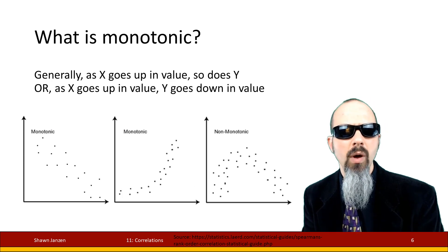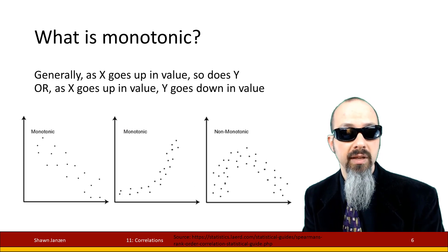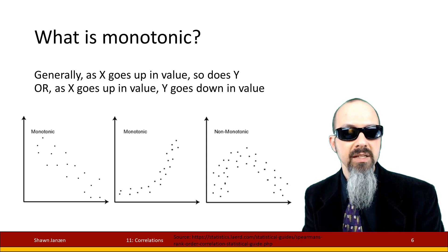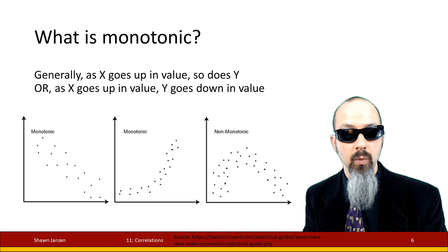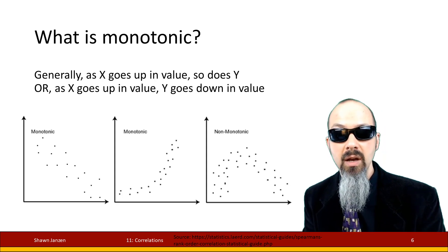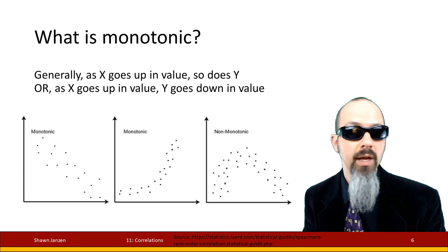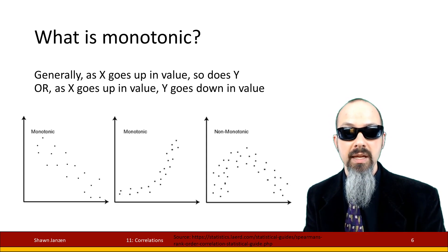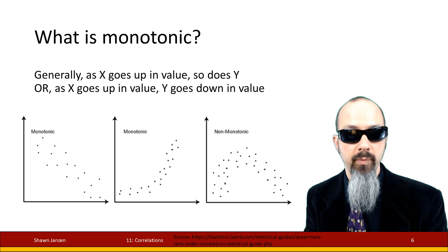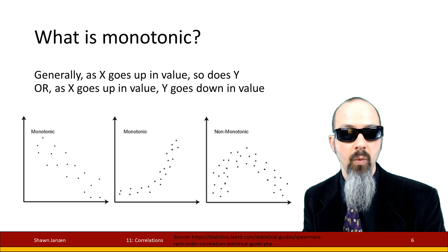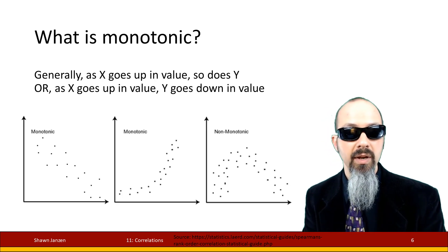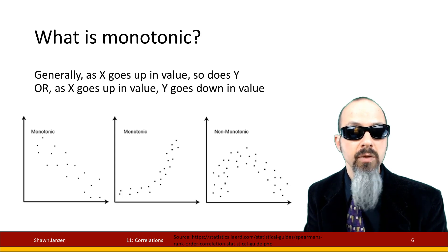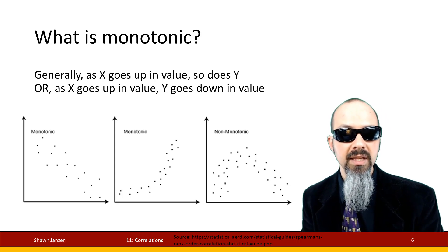Let's talk briefly about what it means to be monotonic. Monotonic is a fancy word that generally means that when X goes up in value, so does Y, and when Y goes up in value, so does X — and vice versa for going down. What it doesn't mean is a curve bending in it, like N shapes and U shapes — those are non-monotonic. So monotonic is still talking about those linear sorts of relationships.